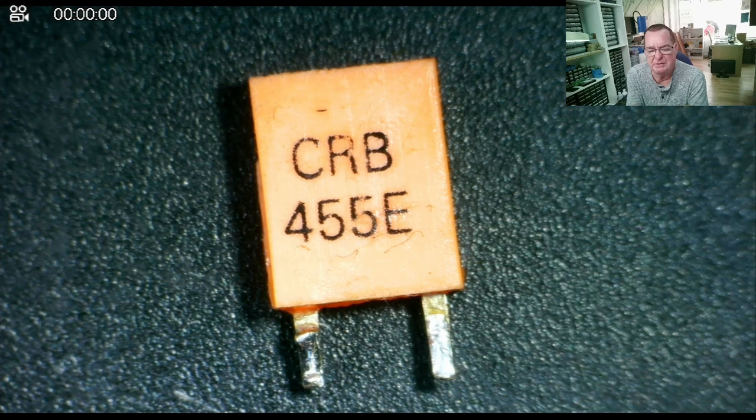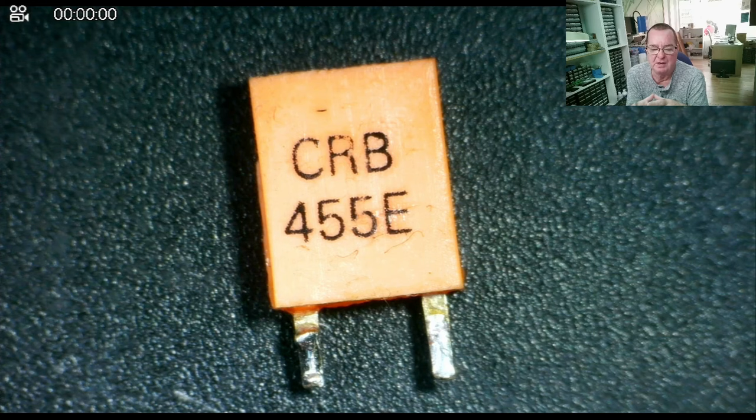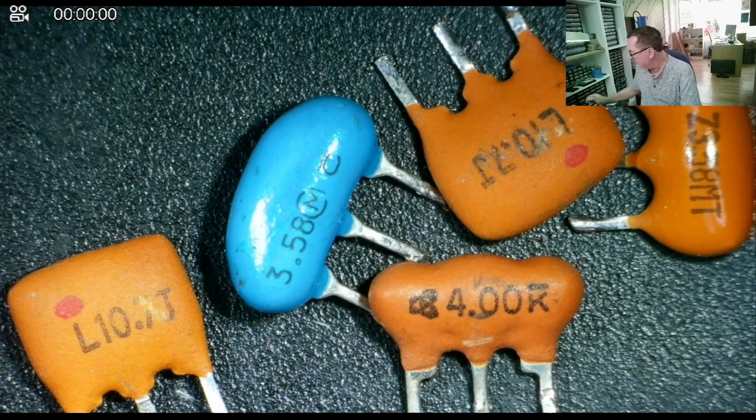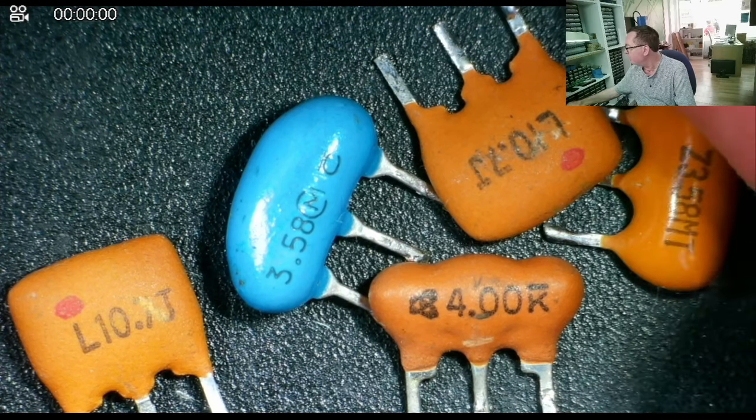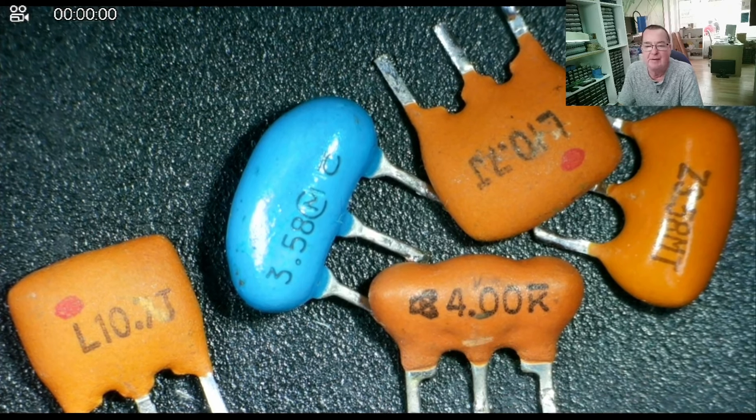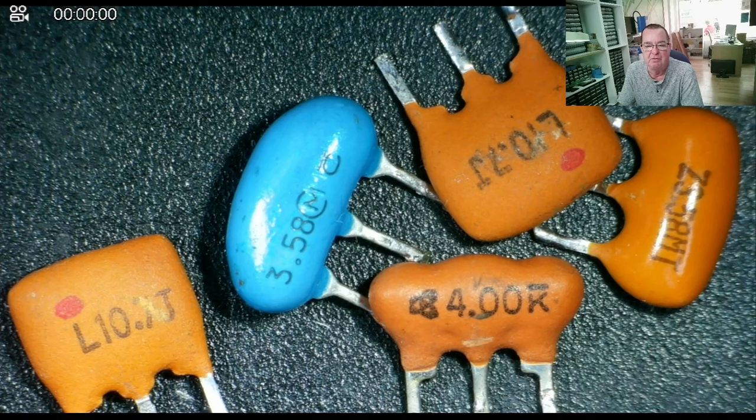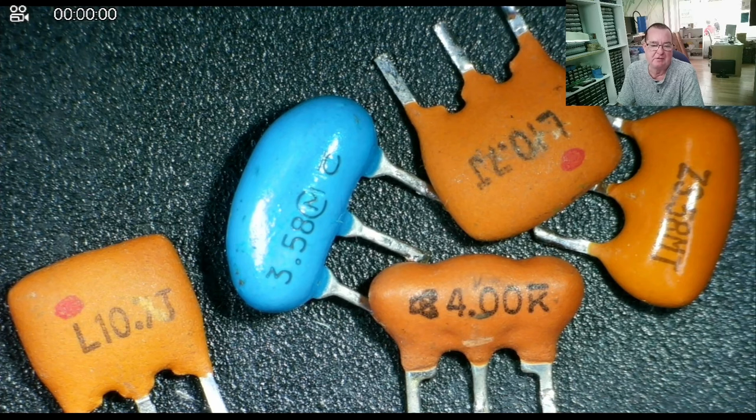The reason I didn't particularly spot that originally is because ceramic resonators, at least the ones I've seen, have three pins on them. So, these are ceramic resonators, they are like capacitors with three legs, so if you see three-legged capacitors like this, they are almost certainly ceramic resonators. I say almost certainly, because I have actually seen double capacitors in packages before now.